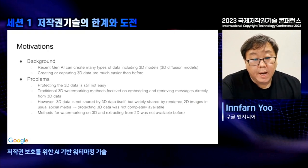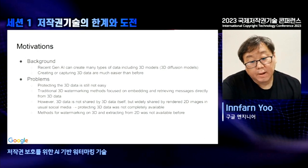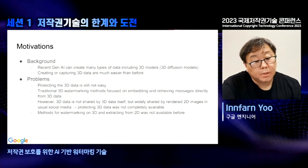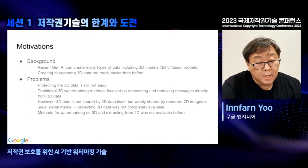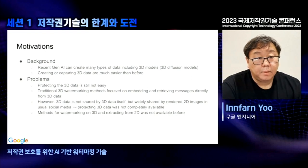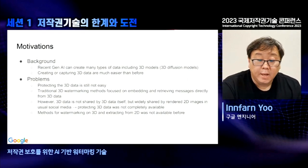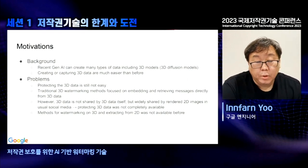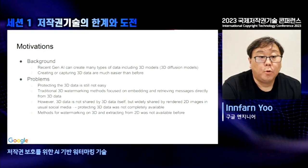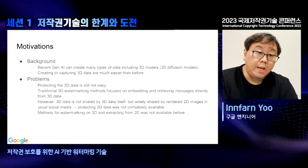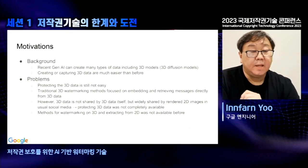Generative AI is now everywhere. Recent generative AI models not only create texts and 2D images, but also cover 3D data generation. There are many 3D diffusion models for generating 3D data. Creating 3D data such as 3D meshes, point clouds, and 3D volumes are now much easier than before. However, we still have one problem: protecting 3D data is still not easy.